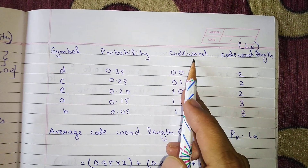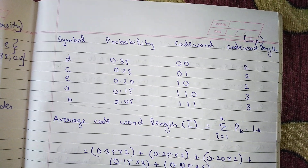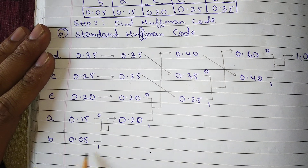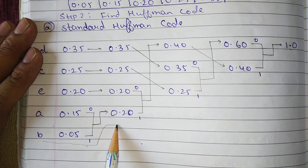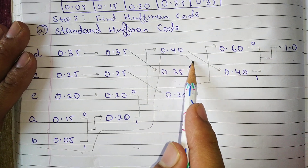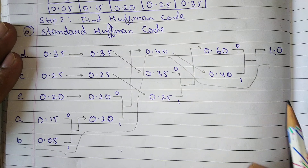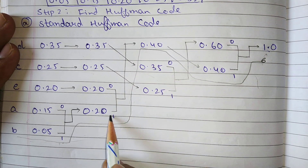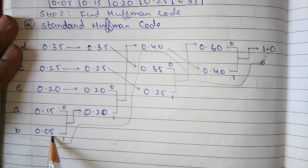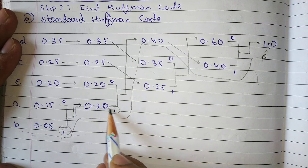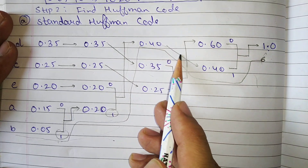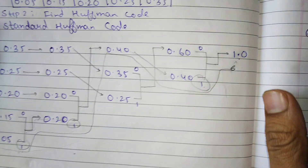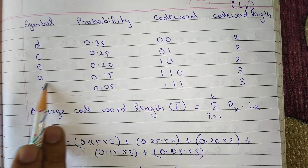Now let us find the codewords. Starting from the bottom-most symbol, b: b traverses up, comes down, and reaches 1, then again 1, then moves up and again 1. So the codeword of b is 1 1 1.